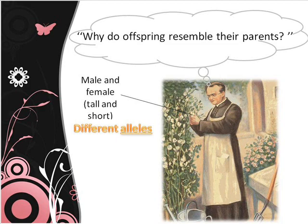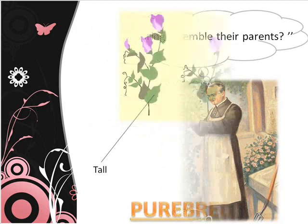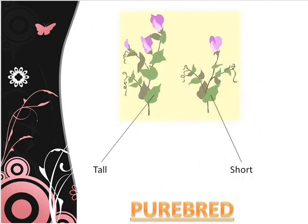Mendel chose plants that were sexually reproduced — male and female pea plants. One had the tall allele and the other the short allele. Alleles are different gene forms. He used a tall pea plant that was purebred and a purebred short one. Purebred means all its ancestors are only dominant or only recessive.